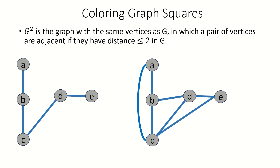Properly coloring the square of G is equivalent to coloring G in a way that vertices at distance two or less are given distinct colors. This is known as a distance-two coloring.